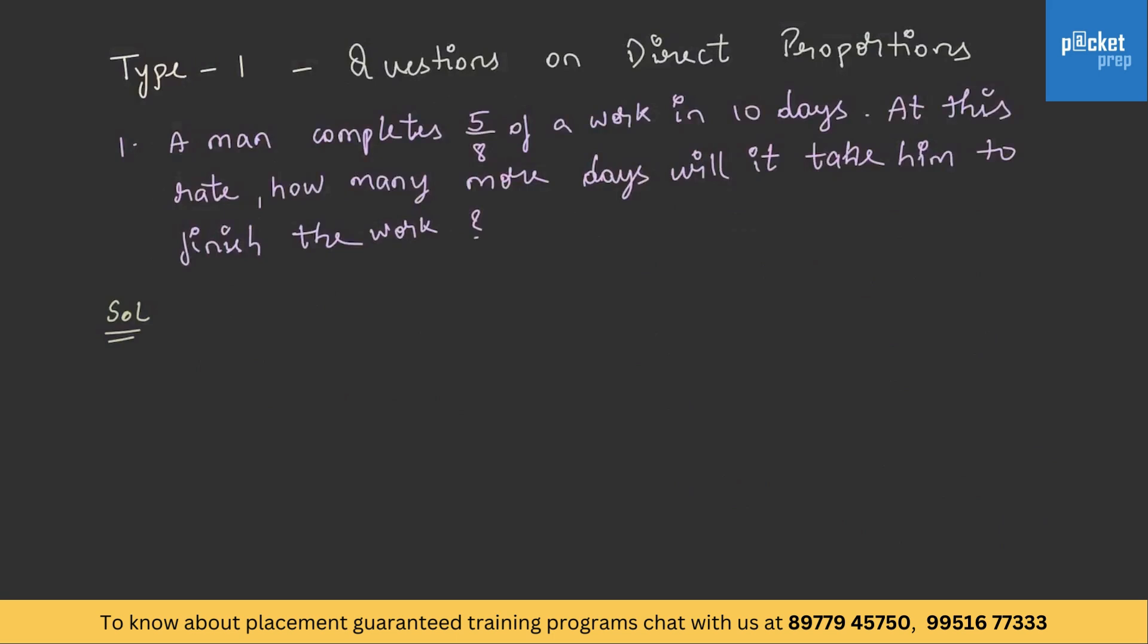Now we shall be solving the questions on direct proportions. A man completes 5/8 of a work in 10 days. At this rate, how many more days will it take him to finish the work? In this question, there are three elements in the given statements: a man, a work, and number of days. So for the first statement let us name it as M1, D1, and W1, and for the second statement let us name it as M2, D2, and W2.